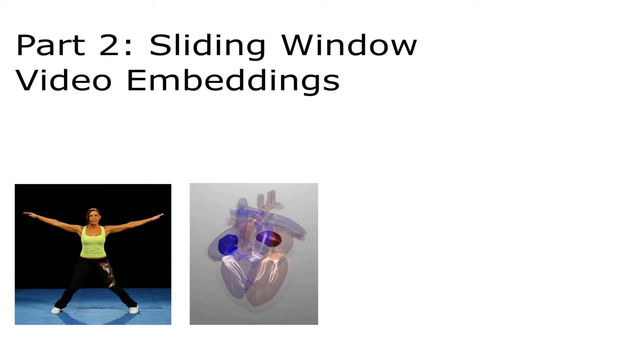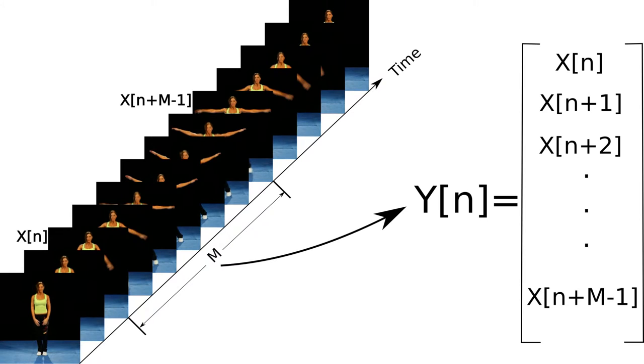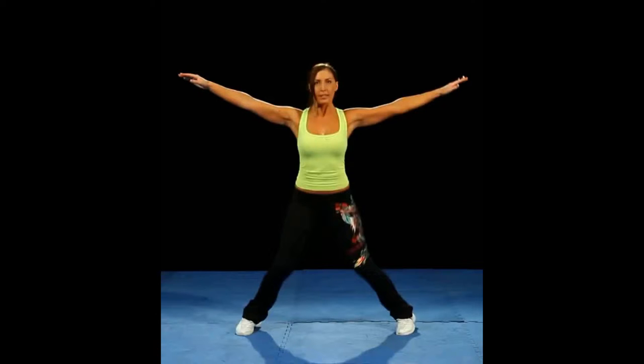Now we have the prerequisites necessary to discuss sliding windows of multidimensional data. In particular, we will focus on sequences of images and videos. The idea is exactly the same, except instead of a sliding window for a 1D time series, we concatenate the result of a sliding window on every single pixel into one large Euclidean vector. The result is that each point in the embedding is a bunch of frames stacked on top of each other, and each pixel in each frame constitutes a dimension.